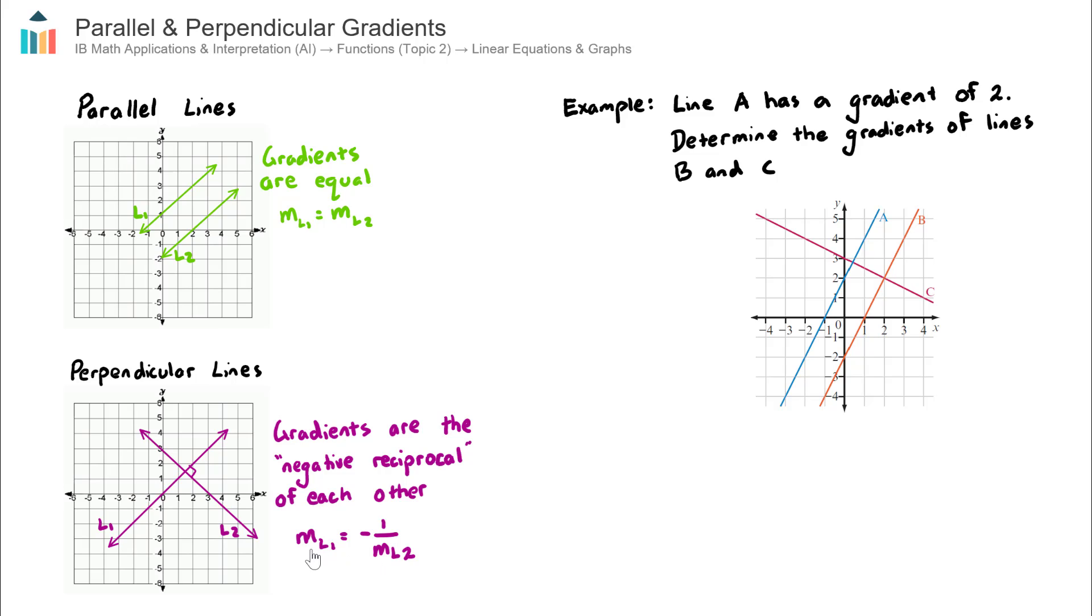Now negative reciprocal means negative 1 on the gradient of the other line. So for example, the gradient of line 1, the one that is sloping up here, will equal negative 1 on the gradient of line 2 that's sloping down.